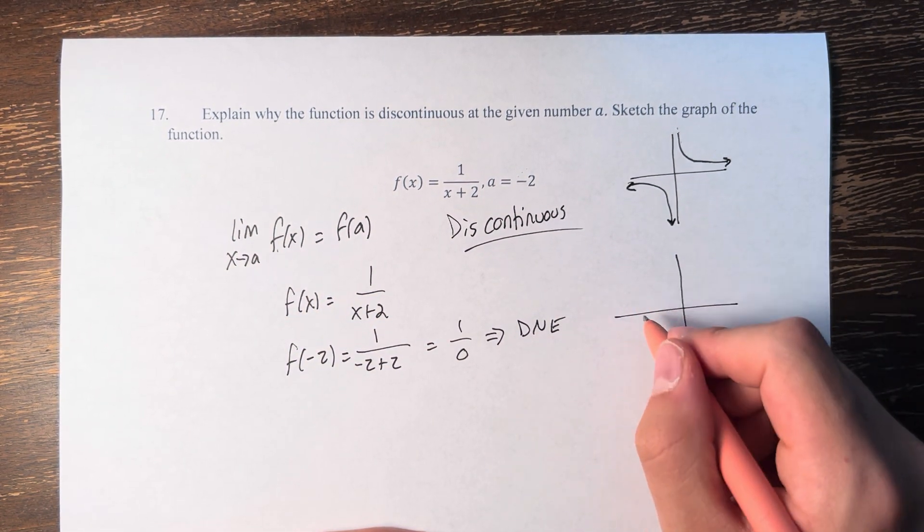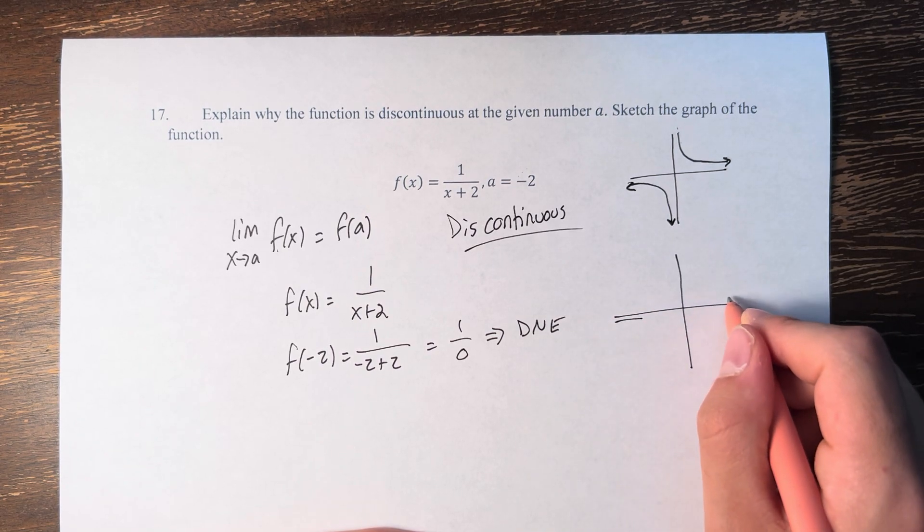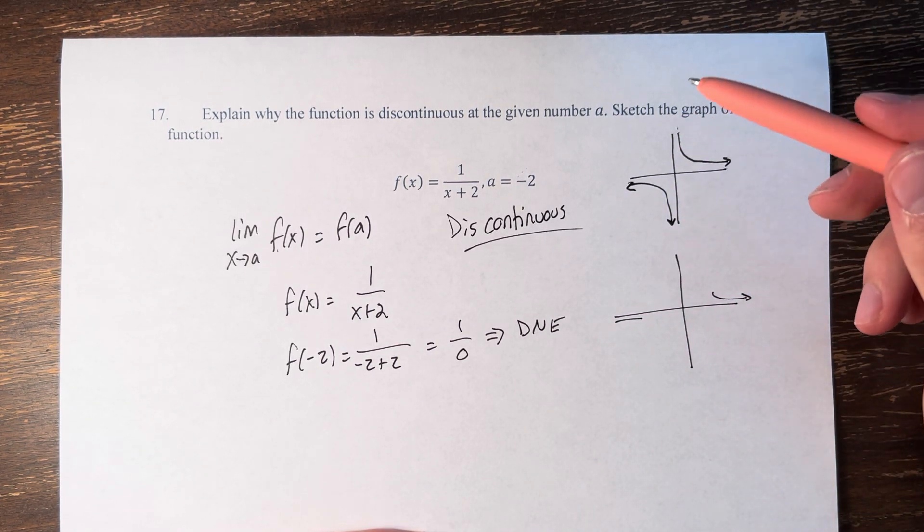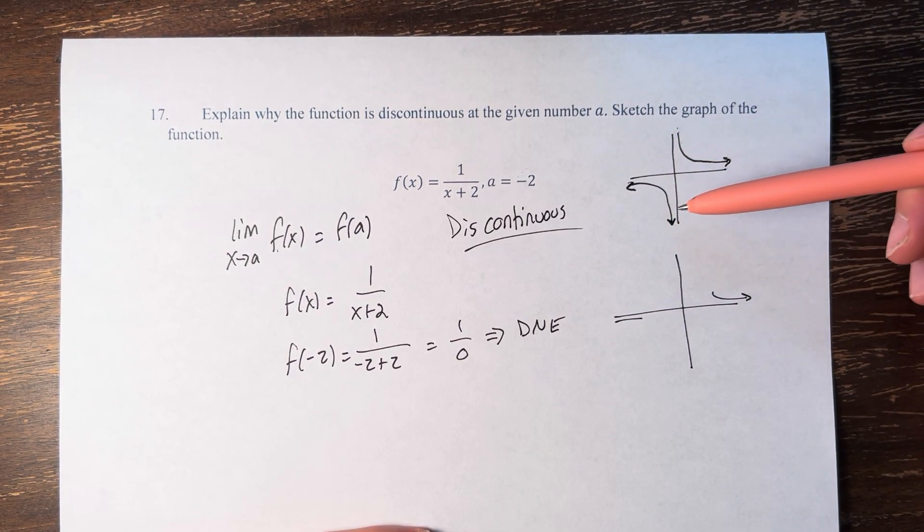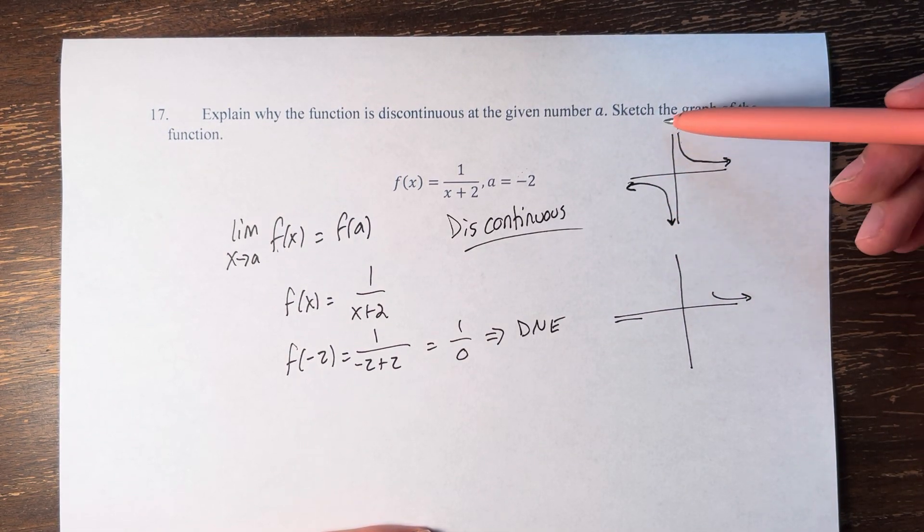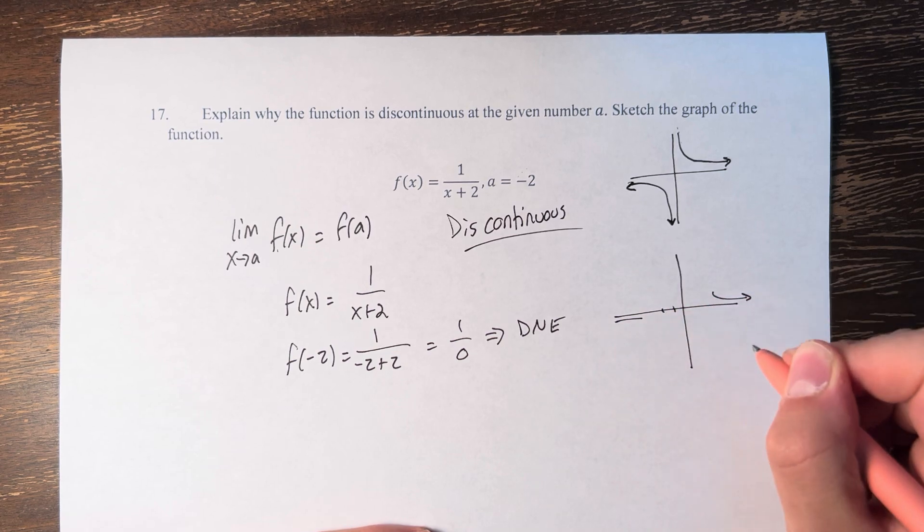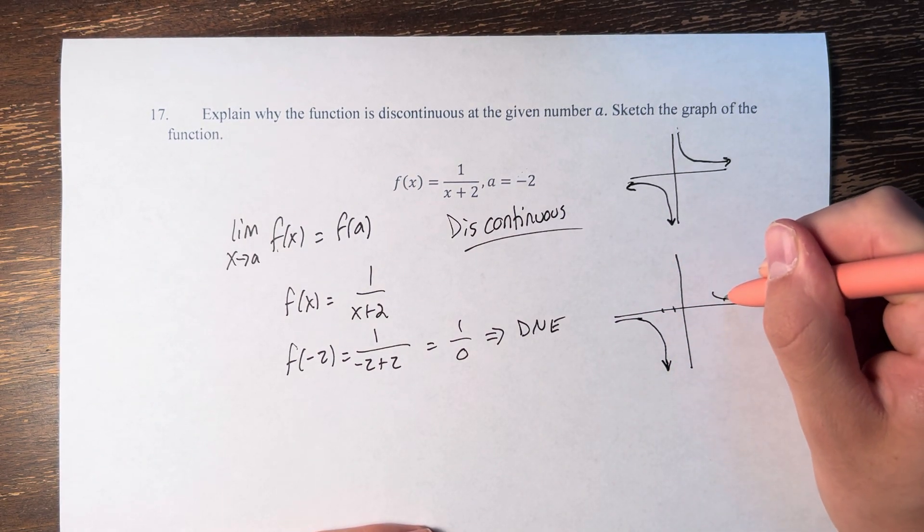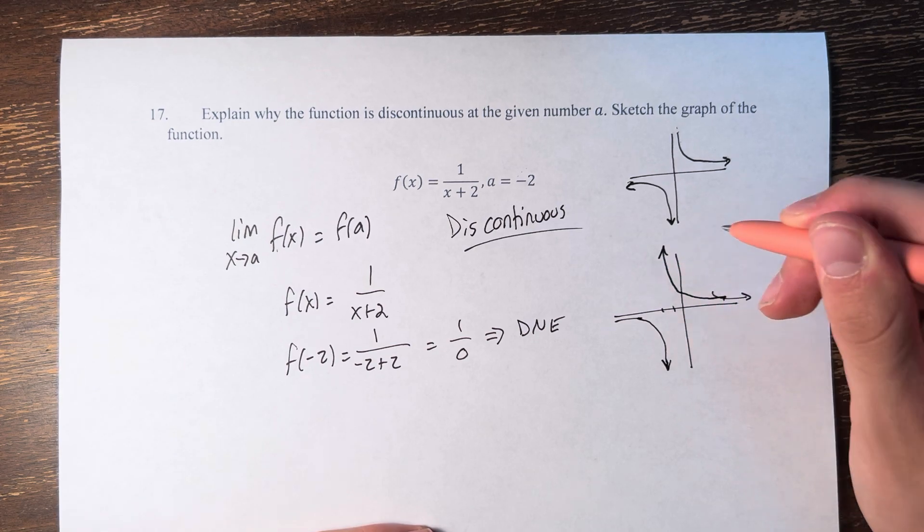So, therefore, as we go off to infinity and negative infinity, we're still going off to 0. However, as we get closer here, we're getting closer to 0. As we go off to infinity and negative infinity, we have to move it over 2 to the left. And as we approach negative 2, we go off to negative infinity and infinity.